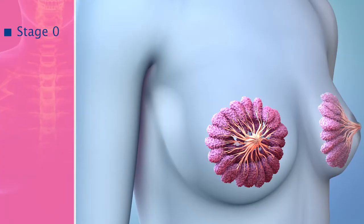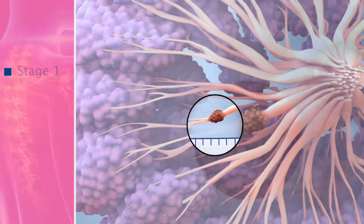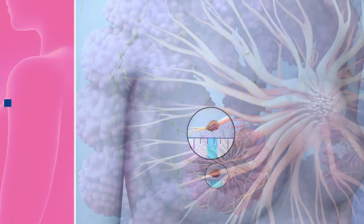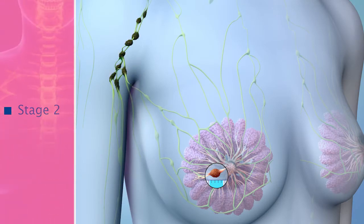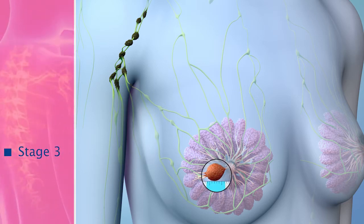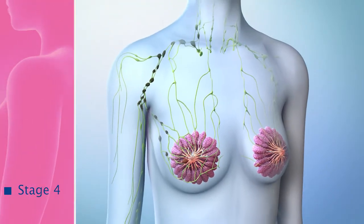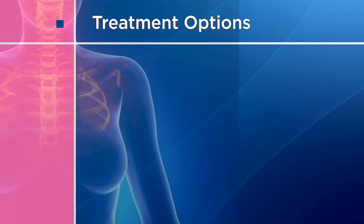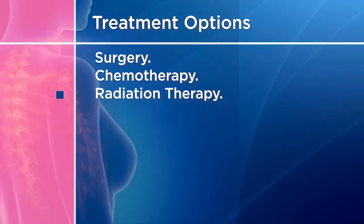Stage zero: the tumor is in the ducts or lobules. Stage one: the tumor is less than two centimeters and may or may not have spread to the lymph nodes. Stage two: the tumor is about five centimeters and has spread to three or more axillary lymph nodes. Stage three: the tumor is larger than five centimeters and has spread to three or more axillary lymph nodes. Stage four: the tumor has spread to other parts of the body such as the bones, lungs, or brain. Treatment options for breast cancer include surgery, chemotherapy, radiation therapy, hormone therapy, and targeted therapy.